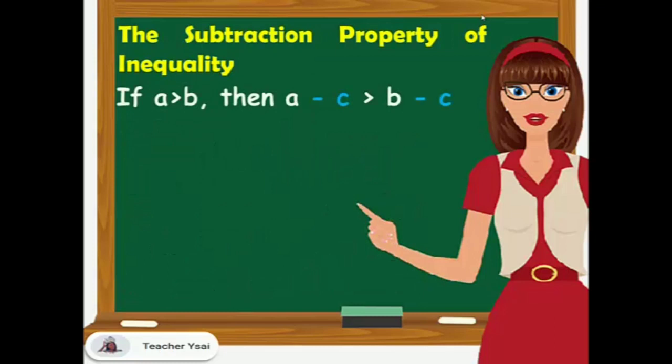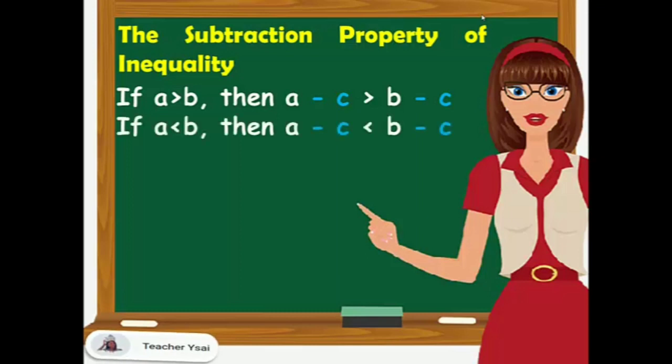If A is greater than B, then subtracting C from both sides of the inequality, A minus C is still greater than B minus C. And if A is lesser than B, then A minus C is lesser than B minus C.